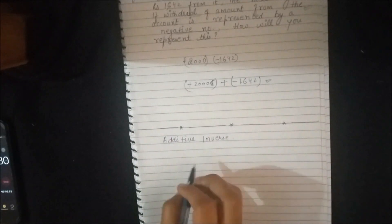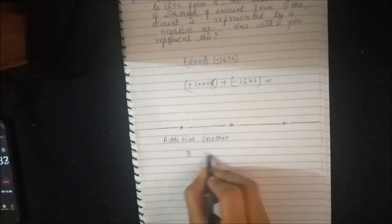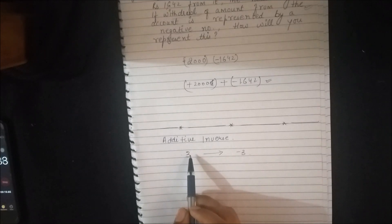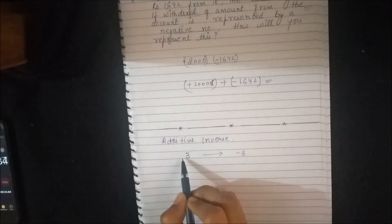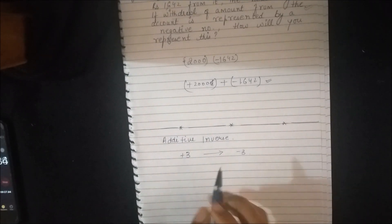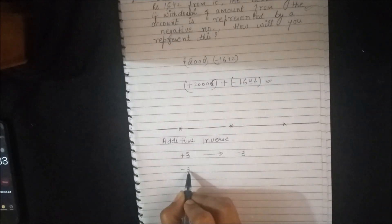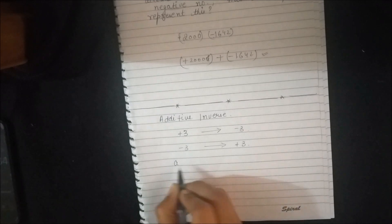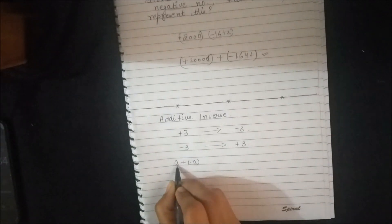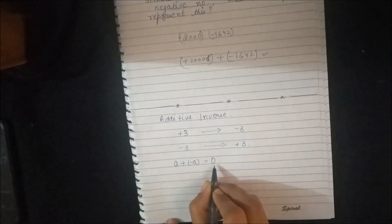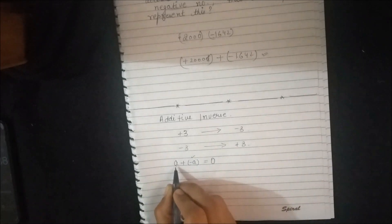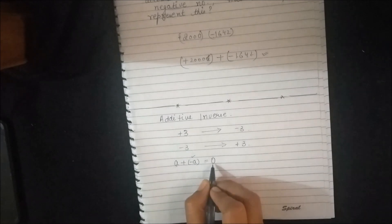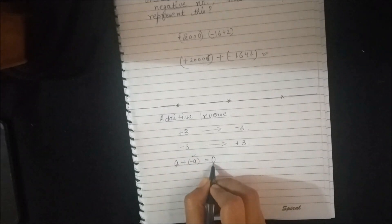What is the additive inverse of a number? If I write the number 3, the additive inverse of 3 is minus 3. The plus in front of 3 is replaced with a minus. Similarly, the additive inverse of minus 3 is plus 3. An additive inverse of a is a number which, when added to a, gives a sum of 0. Whenever two numbers are added resulting in 0, those two numbers are additive inverses of each other.